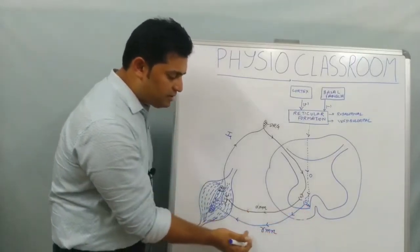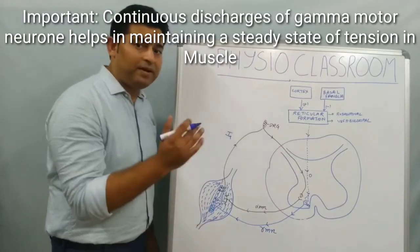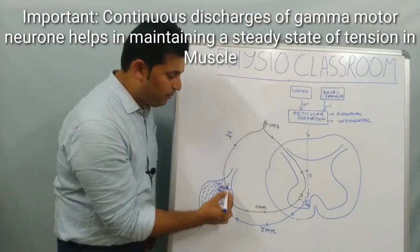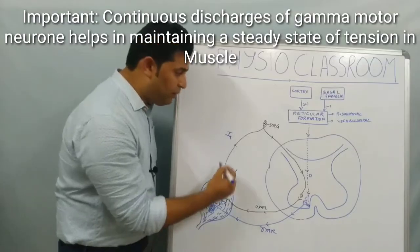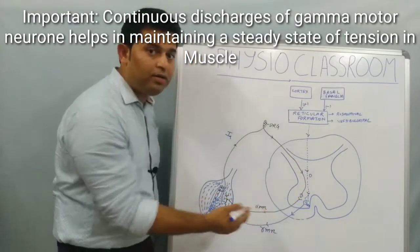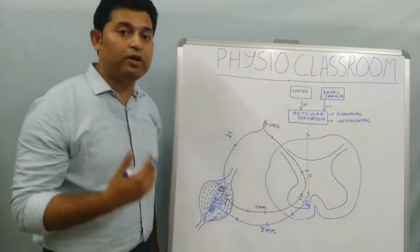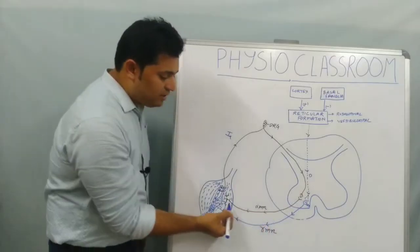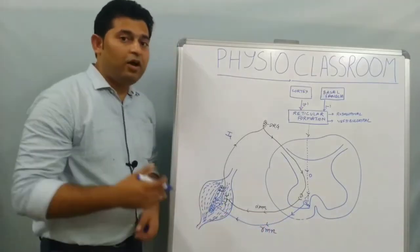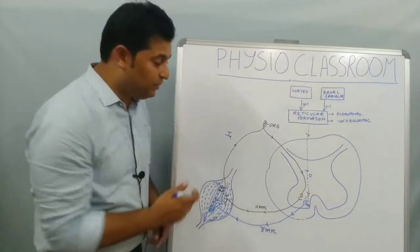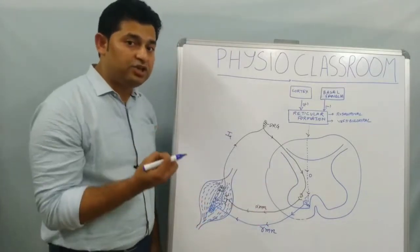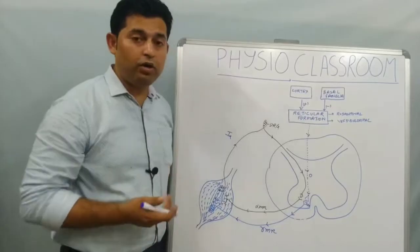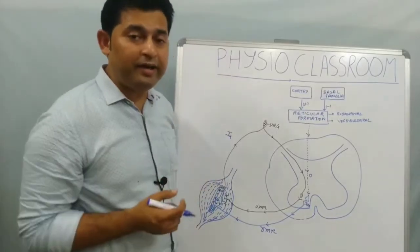In summary: because of continuous discharges of the gamma motor neuron to the muscle spindle, the spindle remains sensitive to contraction and stretch. This is picked up by the 1a fiber, sent to the spinal cord, reaches the alpha motor neuron, and as a result the alpha motor neuron continuously keeps discharging stimulation to the extrafusal fiber. So even at rest, this activity is ongoing and tension is present in the muscle.